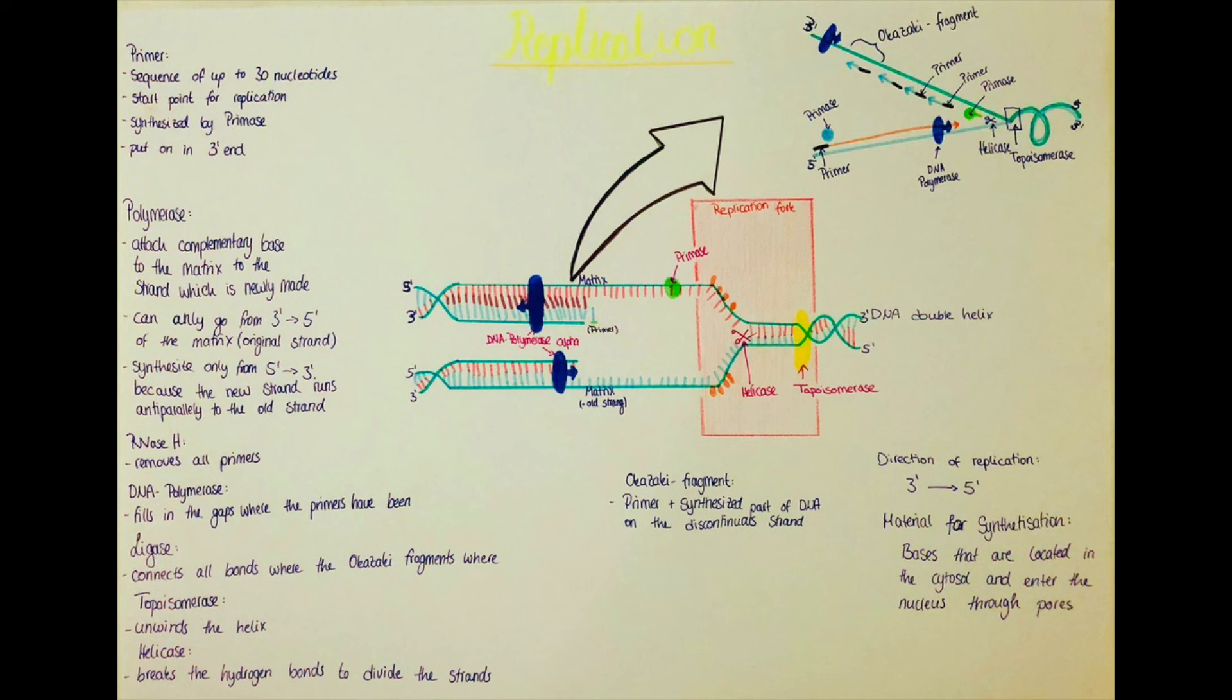In this video especially we're going to talk about replication. Replication is when we have one cell we divide it and now suddenly we need two complete sets of our DNA. By replication we take one DNA and make exactly the same as a copy again, and how this is done I will explain now.